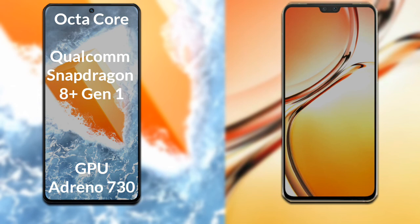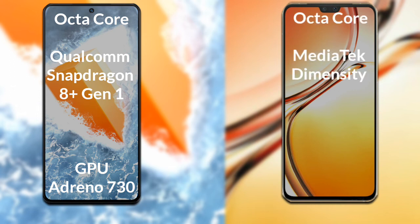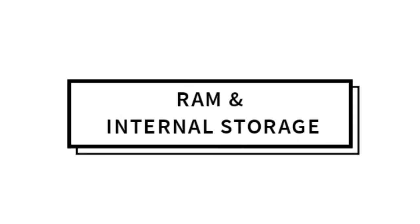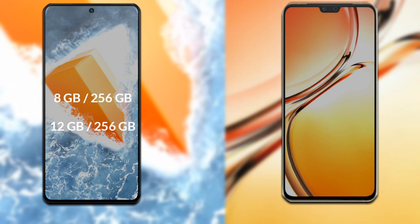Let's talk about the processor and GPU of both phones. The Vivo iQOO 9T has an octa-core Qualcomm Snapdragon 8 Gen 1 Plus processor with Adreno 730 GPU. The Vivo V23 has an octa-core MediaTek Dimensity 920 processor with Mali-G68 GPU.